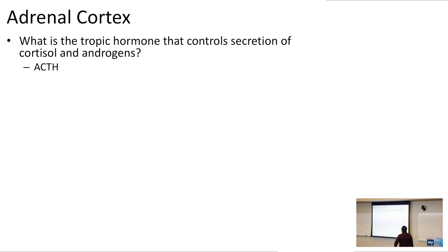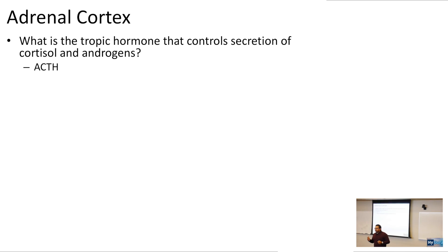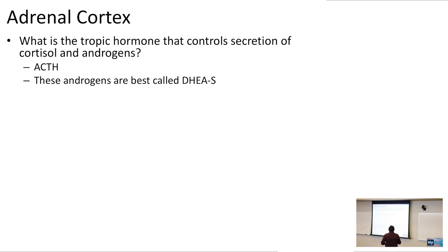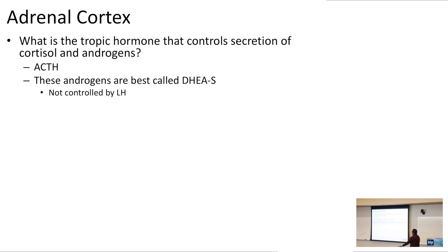The trophic hormone is going to be ACTH. The androgens made from the adrenal cortex — remember, the reticularis is going to make these adrenal androgens, called DHEAS. These adrenal androgens are not controlled by LH. Usually we think of androgens being controlled by luteinizing hormone, but these adrenal androgens are going to be controlled by ACTH.